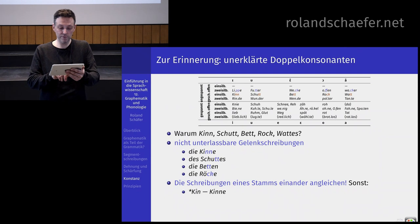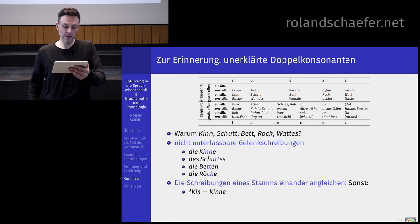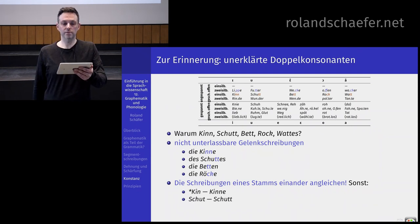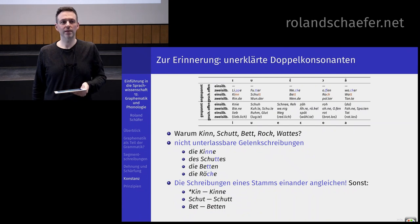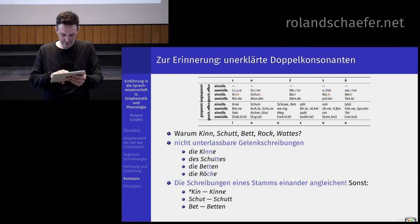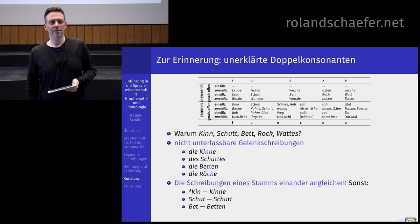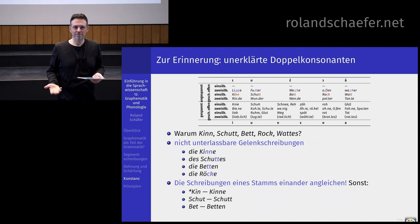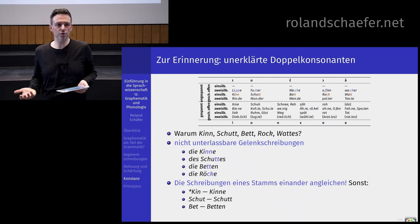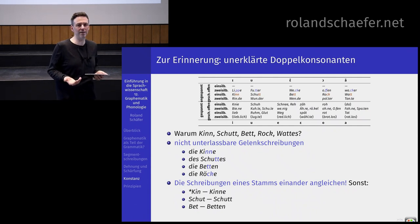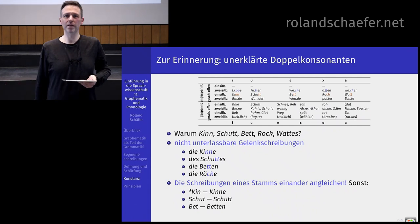Also so ist das System: die Stämme sind möglichst in der Schreibung ähnlich zu den Fällen, wo wir Silbengelenk schreiben würden. Sonst hätten wir: das Kinn, die Kinne – oder der Schutt, des Schuttes – oder Bett und Betten: Bet und Betten. Bett müsste eigentlich anders aussehen, weil Betten schreibt man mit Doppelkonsonanz. Und wenn wir den Stamm möglichst immer gleich schreiben wollen, dann empfiehlt es sich auch da, wo wir das Silbengelenk nicht haben, die Doppelkonsonanz beizubehalten.